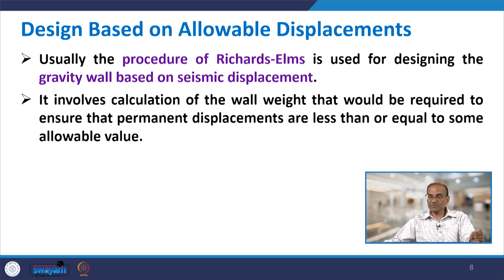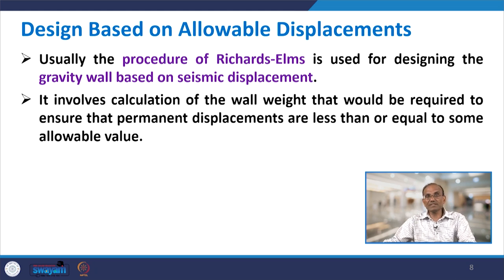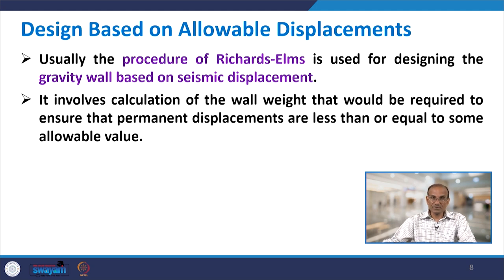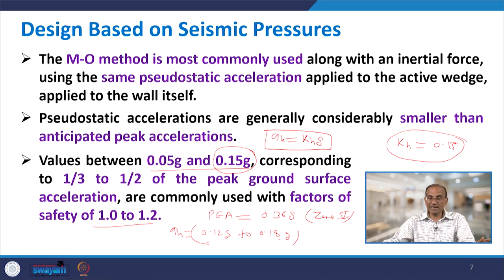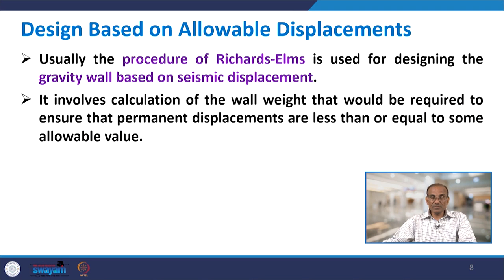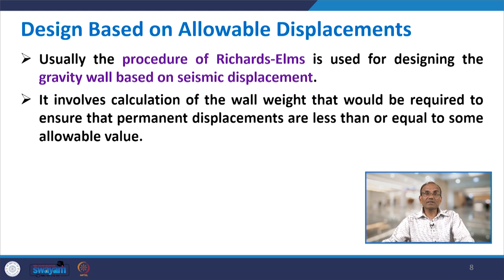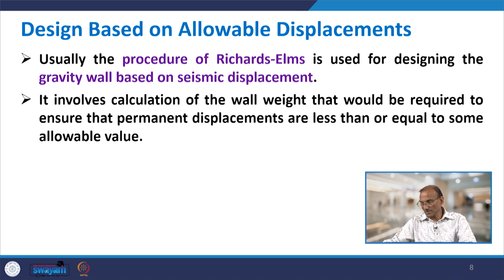The Richard Elms procedure is commonly used for designing gravity walls based on seismic displacements. It involves calculation of the wall weight required to ensure that permanent displacements are less than or equal to some allowable value. If design is based on seismic pressure, the MO method is used; if based on allowable displacement, the Richard Elms method is used.